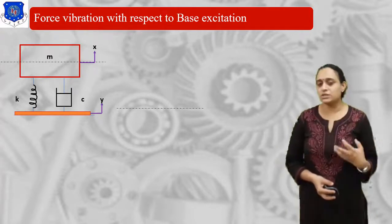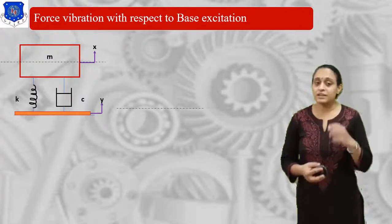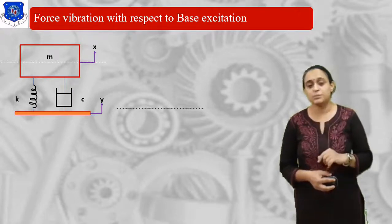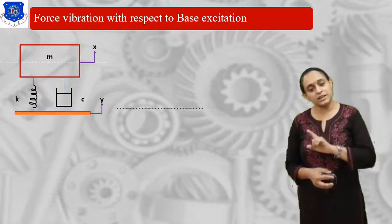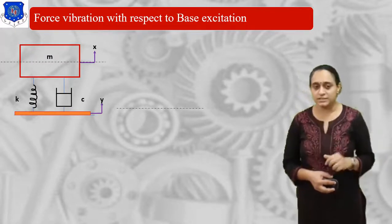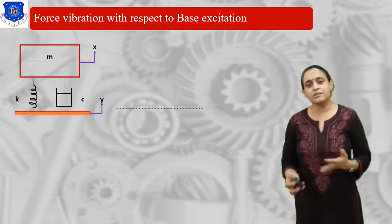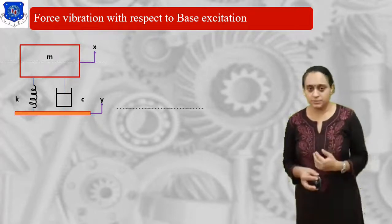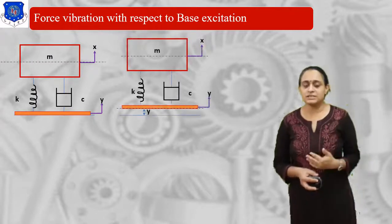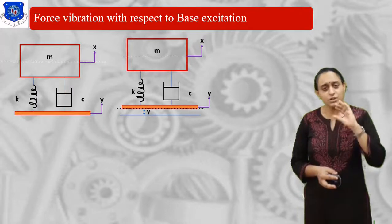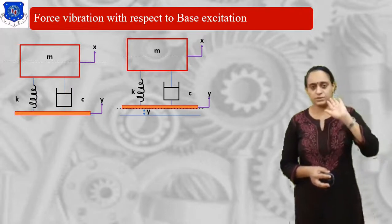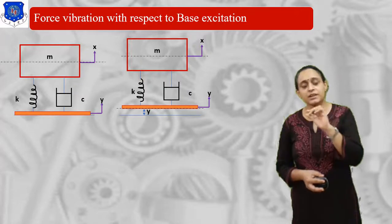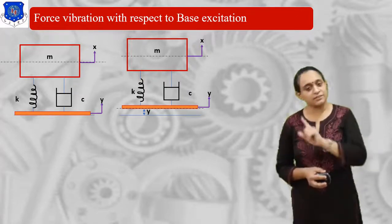We assume any external force tends to apply on the system. By that application of force, the mass will tend to move in the x direction in the upward position, and the base will tend to move in the same manner but with displacement y. Since displacement may differ from point to point, mass M has displacement x and the base has displacement y. As the system moves upward, the spring and damper have some different displacement, but the base has displacement y.